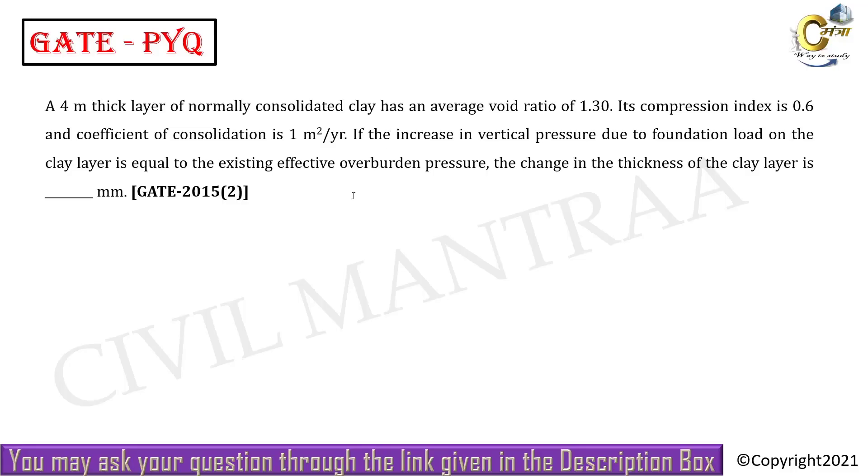Hello students, welcome to Civil Mantra. The question is: A 4 meter thick clay layer of normally consolidated clay has an average void ratio of 1.3, its compression index is 0.6, and coefficient of consolidation is 1 meter square per year. If the increase in vertical pressure due to foundation load on the clay layer is equal to the existing effective overburden pressure, the change in the thickness of the clay layer is?